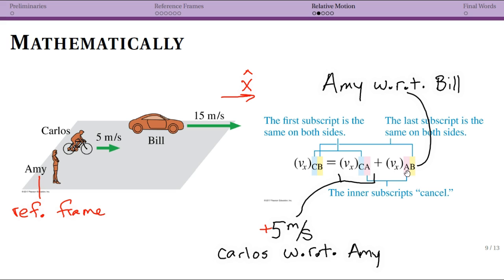Now this other one, vAB, is Amy with respect to Bill. Now the answer is not 15 meters per second because that's how fast Bill is going with respect to Amy. So think about being Bill. What would Amy look like from Bill's point of view? It would actually look like Amy's going backwards at 15 meters per second. So this here is actually negative 15 meters per second.